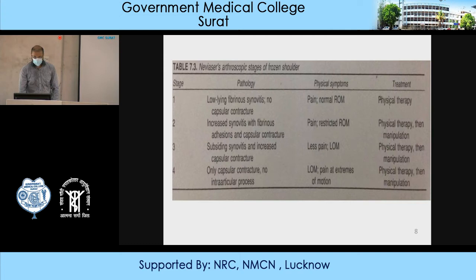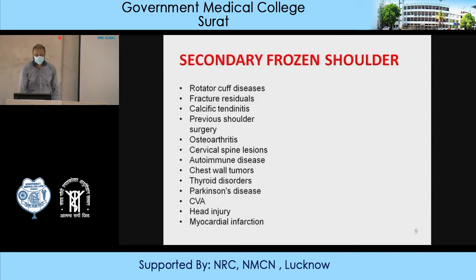What can lead to secondary frozen shoulder? Mainly rotator cuff disease, fracture acidules, calcific tendinitis, previous shoulder surgery, osteoarthritis, cervical spine lesions, autoimmune disease, chest wall tumors, thyroid disorder, Parkinson's disease, CVA, head injury, and myocardial infarction.